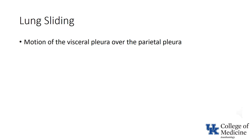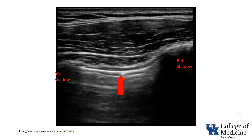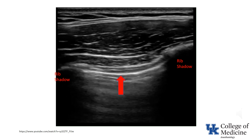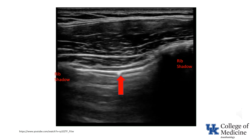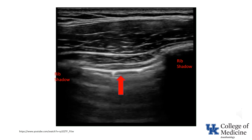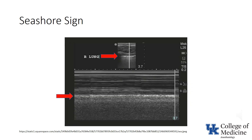Lung sliding represents the motion of the visceral pleura over the parietal pleura. By definition, lung sliding is a dynamic process. As shown in this video, it appears as shimmering or sliding between the two layers. Normal lung sliding may be represented by a still image obtained in M-mode, the results of which are termed the seashore sign. The parallel lines at the top of the image represent waves, and the granular texture below the pleural line represents the sandy shore.